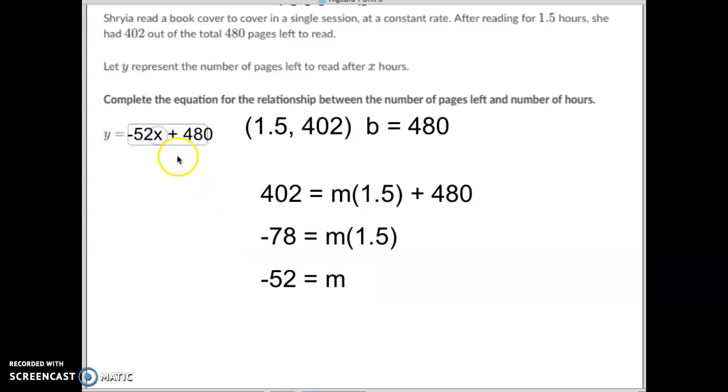So now that we know the m and the b, we've got our equation, y equals negative 52x plus 480. If you have any questions, please come see me. Other than that, good luck on your con today, and we will see you again tomorrow. Bye-bye.